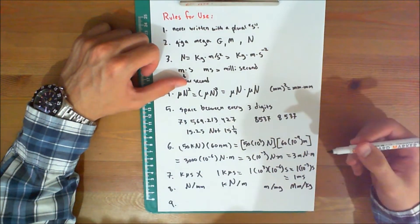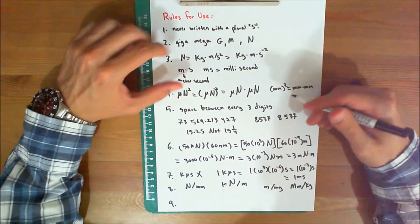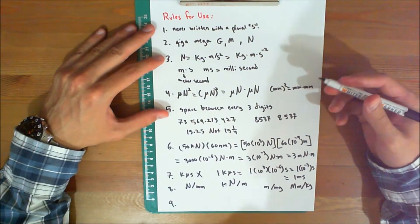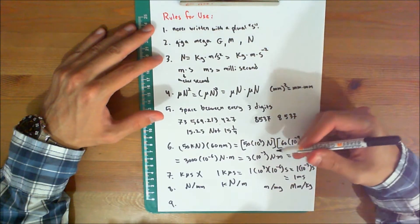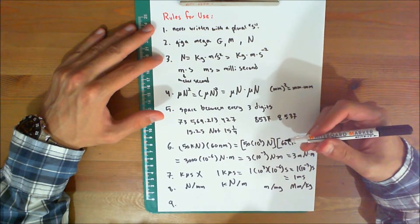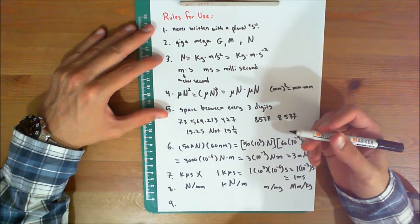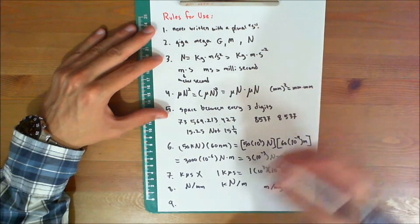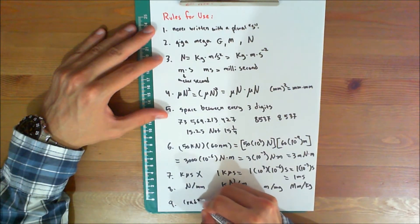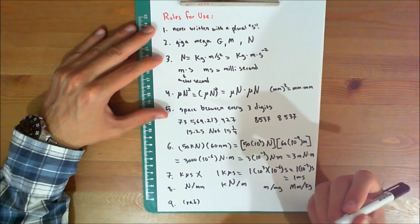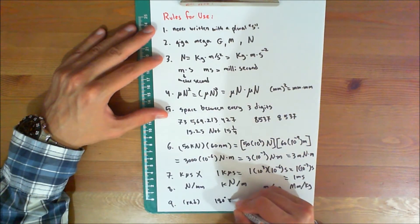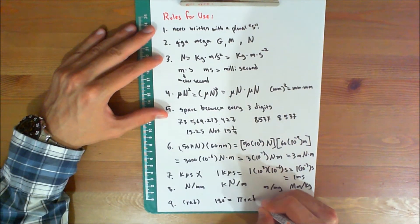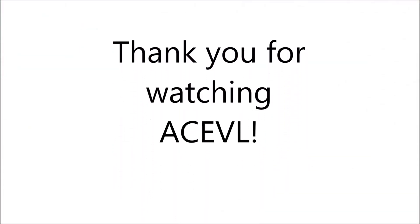Number nine: although not expressed in multiples of 10, the minute, hour, and so on are retained for practical purposes as multiples of a second. Furthermore, plane angular measurement is made using radians, where degrees will often be used, with 180 degrees equal to pi radians.